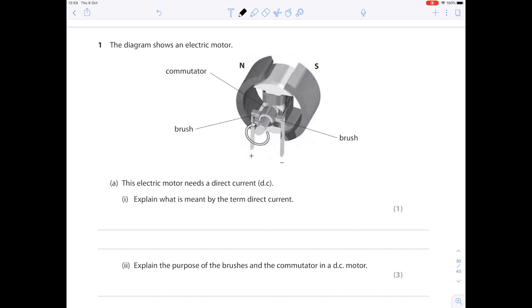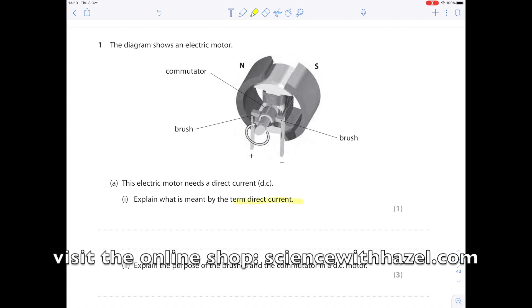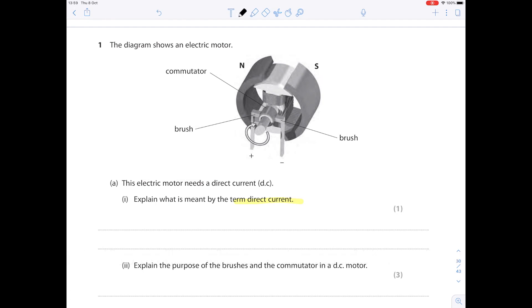Question one: the diagram shows an electric motor. The electric motor needs a direct current. Explain what is meant by the term direct current. You have to learn your key definitions. Remember that my perfect answer revision guides are full of those key definitions. So direct current, you simply write that the current flows in one direction only. And it is so important that you state the word only.